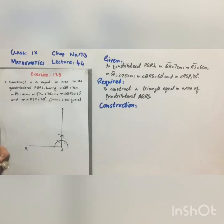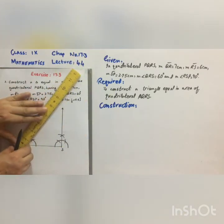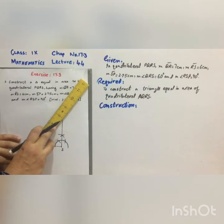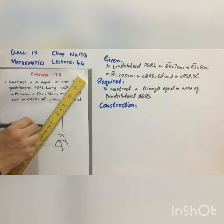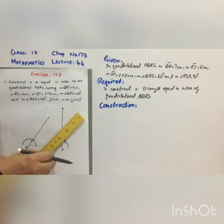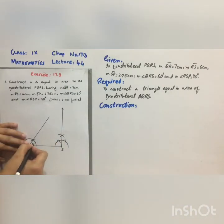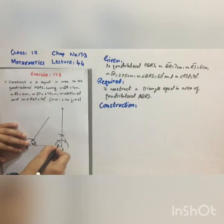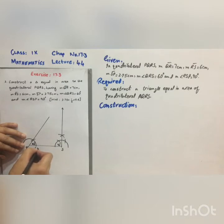Then angle R is of 60 degrees. Make an angle of 60 degrees at R. It is 60 degrees and 90 degrees. It is 6 cm long.